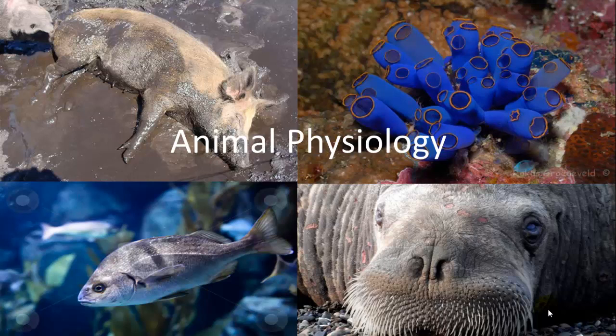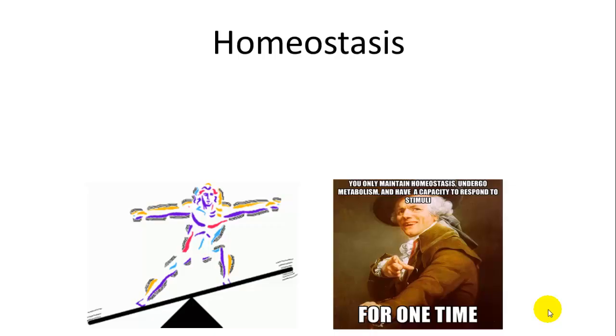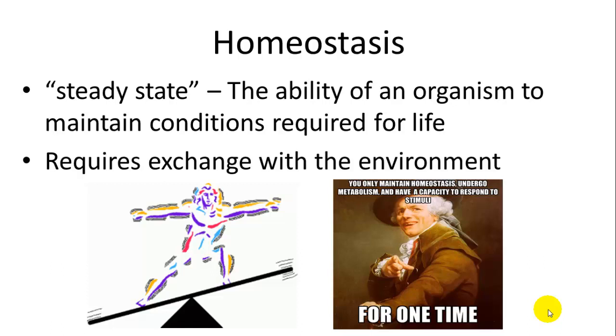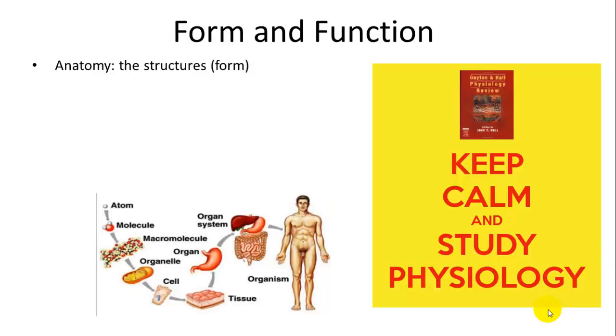This should be some interesting topics with relevance to medical applications. We're going to talk about the physiology of animals, or how they maintain homeostasis — the internal reactions and processes which allow for the efficient use of energy and the coordination between systems to maintain homeostasis. Homeostasis is the steady state, or ability of an organism to maintain conditions required for life, which requires exchange with the environment because we need oxygen and food for energy.